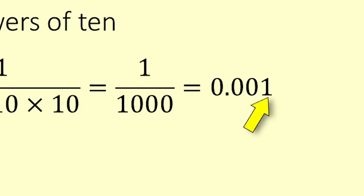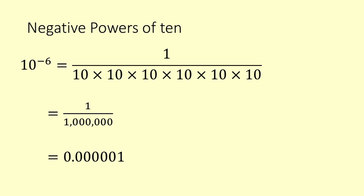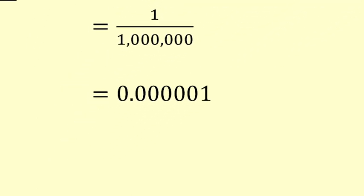10 to the power of negative 6 is 1 divided by 10 times 10 times 10 times 10 times 10 times 10, which equals 1 divided by 1,000,000, which is 0.000001. One thing to always remember is that the number of zeros between the decimal point and the digit is 1 less than the power — a useful thing to remember.